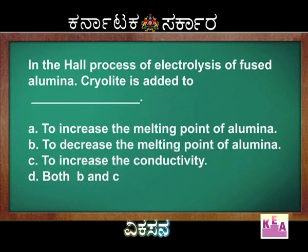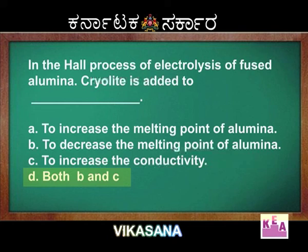Option B — decreases the melting point of alumina — is correct. Option C — increases the conductivity — is also correct. Therefore, the right option is Option D: both B and C are right.